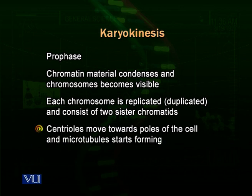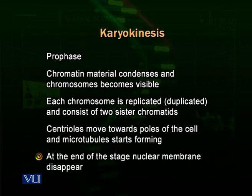In prophase, the chromosomes are condensed and consist of sister chromatids attached to each other. The centrioles start moving towards the poles of the cell and form the spindle fibers — long fibers present for the attachment of chromosomes and their movement. Almost at the end of prophase, the chromosomes attach themselves with the help of their kinetochore to the spindle fibers. Then the nuclear membrane starts dissolving, and the chromatin material is exposed in the nucleoplasm, no longer surrounded by a membrane.